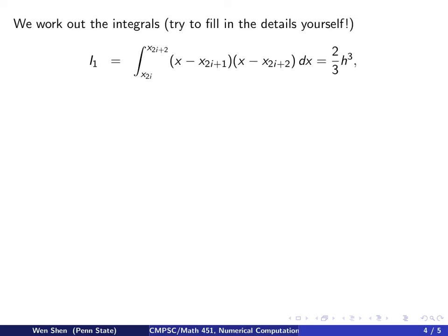So we can work out these integrals. These are just polynomials of degree 2, and you can fill in the detail by working it out. So what you will get for the first term related to the cardinal function at the left point, we call it this value L1, is the integral of this polynomial, and you will get exactly 2 over 3h cubed. So I encourage you to work this out by yourself.